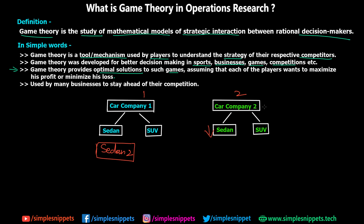The analysts at car company two have predicted this and now they have two options. They can either develop a new sedan model of their own, or they can offer discounts on their existing sedan. Let's say both existing sedans are priced at 5 lakhs, and company one is going to introduce sedan two at 6 lakhs. If company two reduces their price from 5 lakhs to 4 lakhs, people will still buy it — why spend 6 lakhs when you can spend 4 lakhs and save 2 lakhs? So instead of creating a completely new sedan, they changed their strategy by reducing their price, and their sales will still increase. This is what game theory can predict if they already have the relevant data.